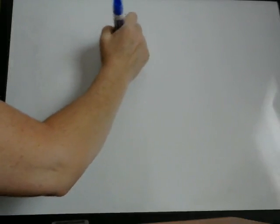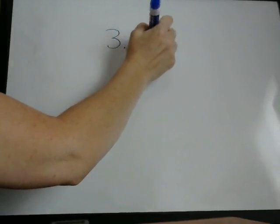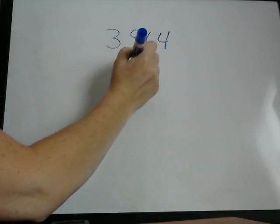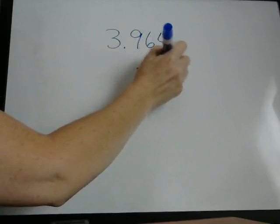Here we're going to do multiplication and then division of numbers that have decimals in them. Multiplying numbers with decimals is actually very easy. For example, if we have 3.964 times 0.25.